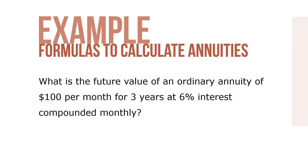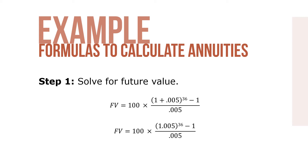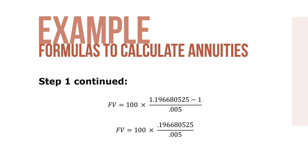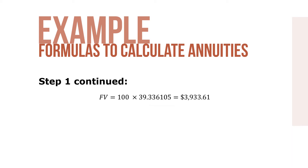Let's take a look at an example. What is the future value of an ordinary annuity of $100 per month for three years at 6% interest compounded monthly? Step 1: solve for future value as you see here. Working out the math, we arrive at a future value of 100 times 39.336105, or a future value of $3,933.61.